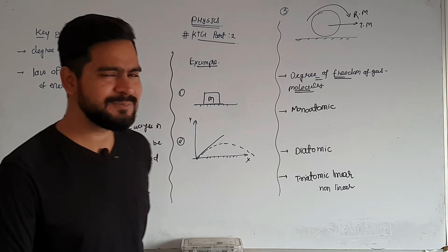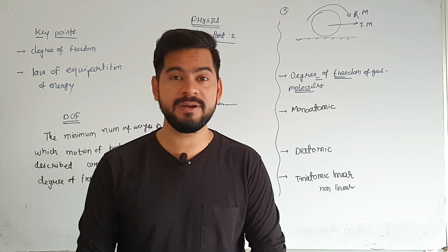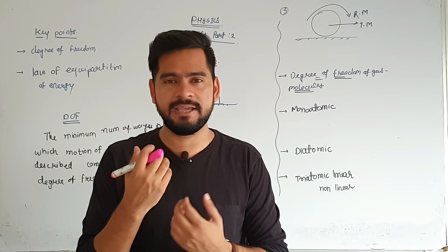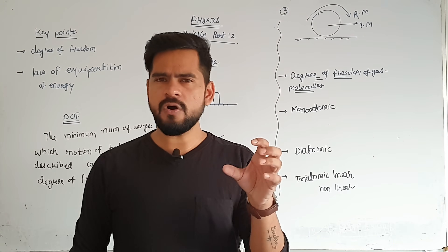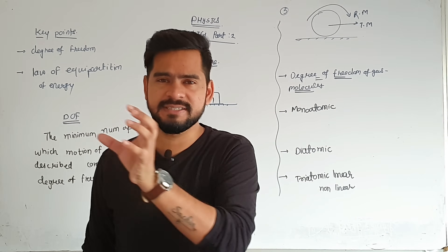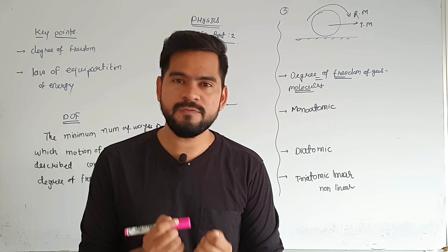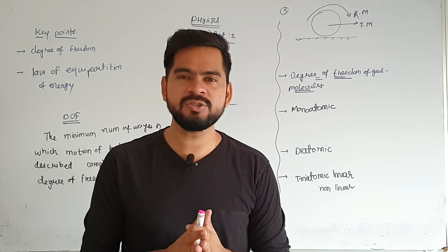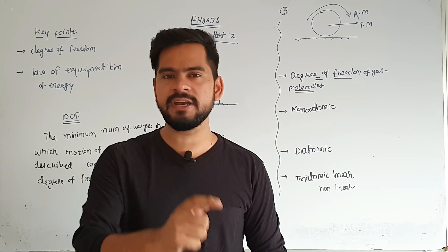So let's see — degrees of freedom, very strange name. Degree of freedom — if you have a molecule, suppose I have a molecule, then there are many many air molecules, oxygen molecules. What kind of freedom does oxygen have? The freedom that it can move. So the number of possibilities of the motion that an atom has — that is actually the degrees of freedom. In very easy language, degrees of freedom means the many possibilities of motion which a molecule or particle has.